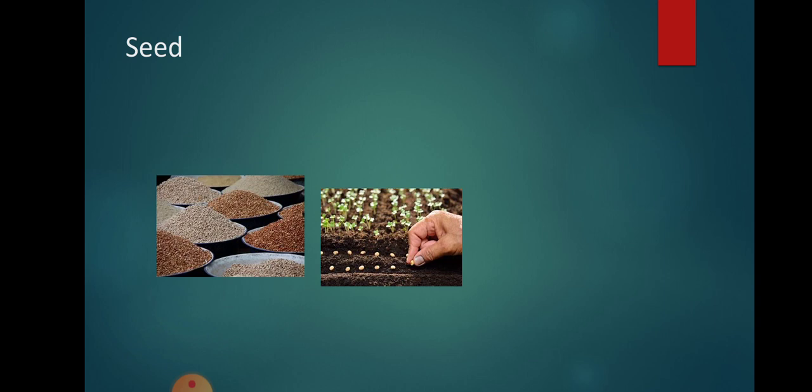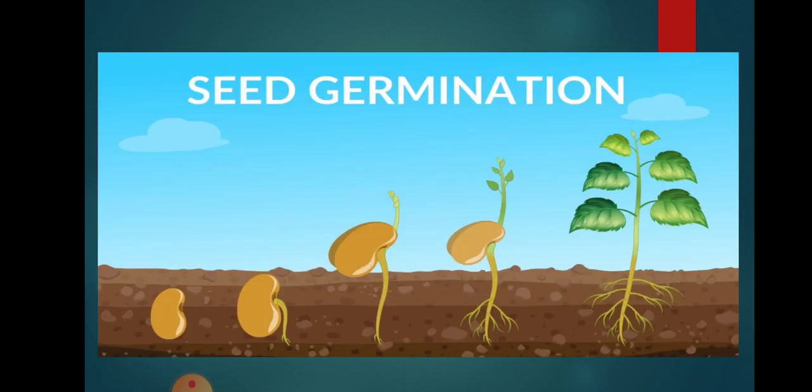Seeds have different shapes, sizes, and colors. We eat seeds of plants such as wheat, gram, corn, rice, and beans. Such seeds are called edible seeds. When a seed gets the right amount of air, water, and warmth, it grows into a baby plant. The process by which a seed grows into a new plant is called germination. The new plant needs air, water, and light to continue growing.